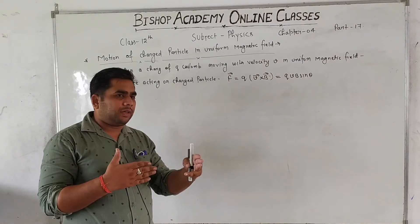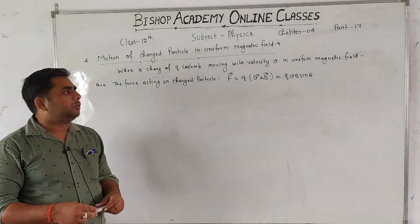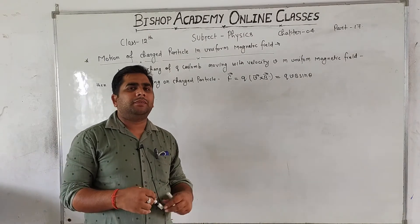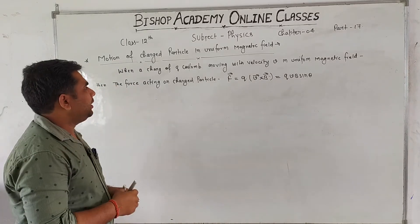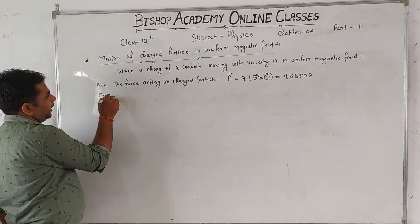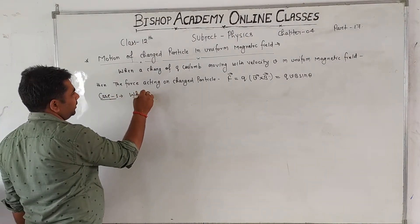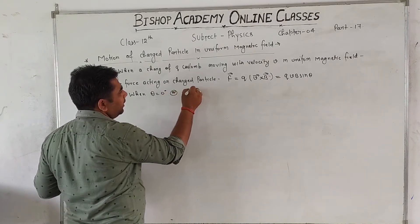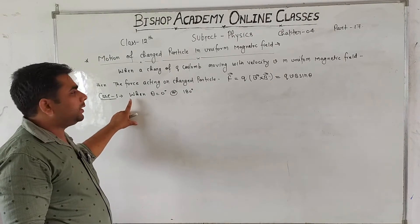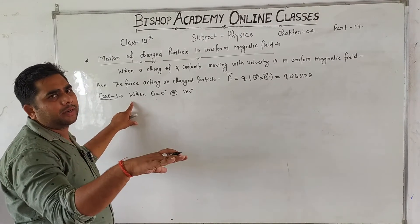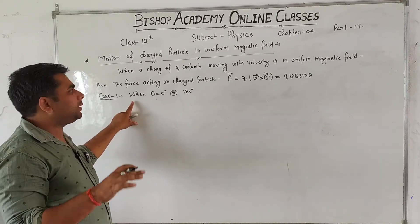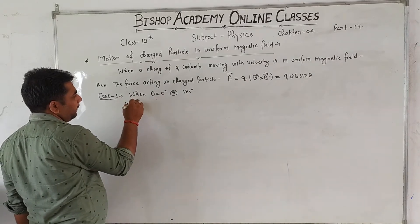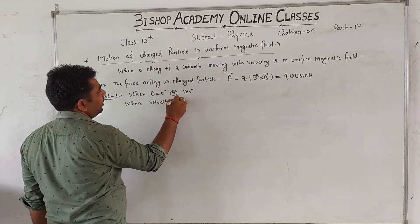जब कोई charge particle किसी magnetic field में किसी angle पे enter करता है, तो उसका path कैसा होगा, इसके बारे में हम पढ़ेंगे। तो यहां पहला हम Case 1 पढ़ेंगे: when theta is equal to 0 degree or 180 degree. इसका मतलब कि जो charge particle है वो या तो magnetic field के parallel enter करता है, या anti-parallel move करता है। When velocity of charged particle is parallel to magnetic field.